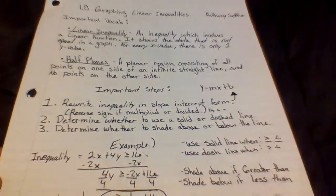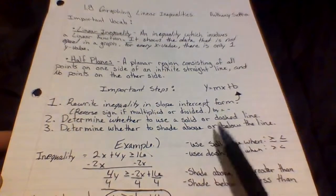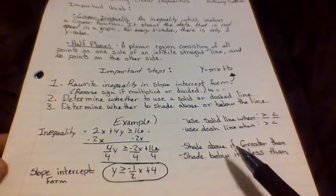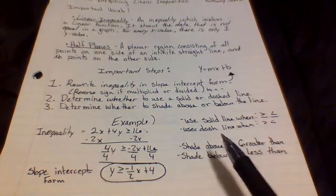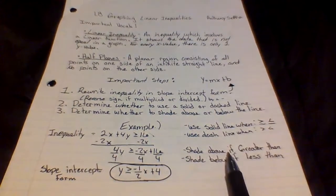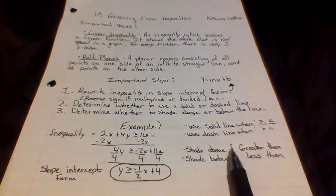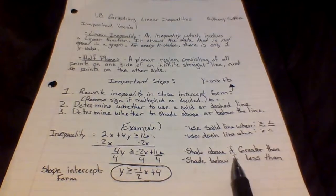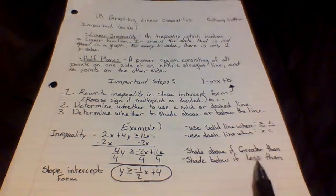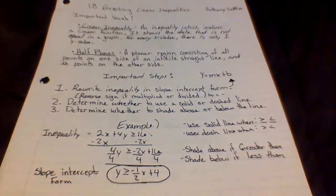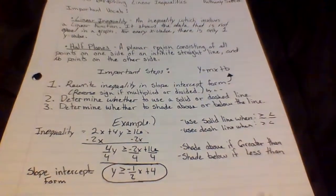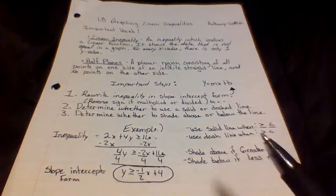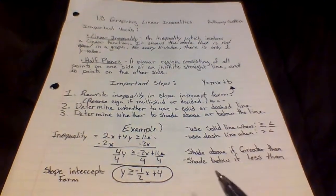Third step: determine whether to shade above or below the line. Shade above the line if it is greater than, and shade below the line if it is less than. There is also another way to figure this out, which I will show in my example.